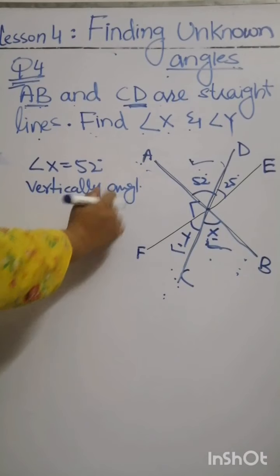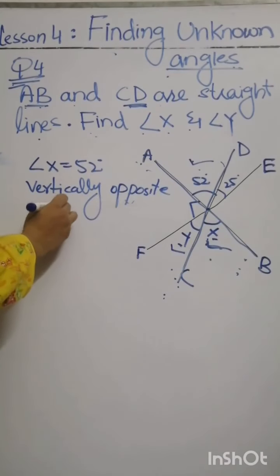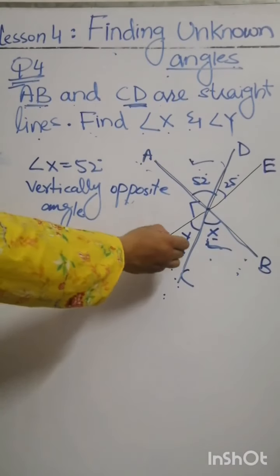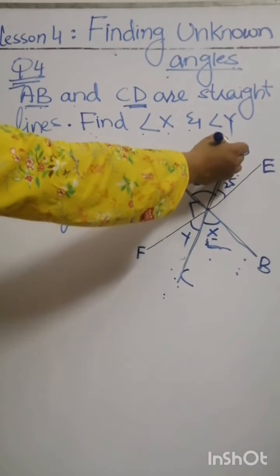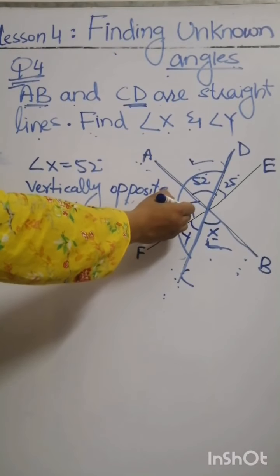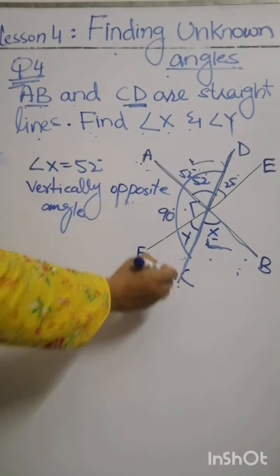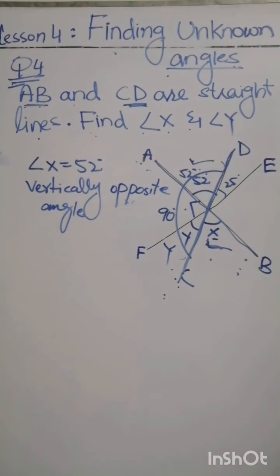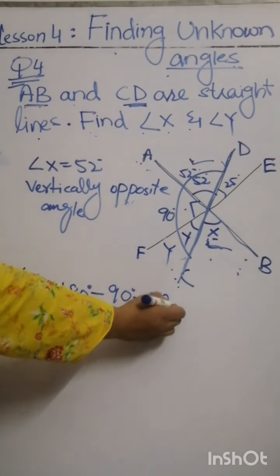Now for the other angle, angle y, we use angles on a straight line. We have CD as a straight line, with one angle being a right angle box — meaning 90 degrees — one angle of 52 degrees, and the third angle y. Angle y is equal to 180 minus 90 minus 52 degrees, because these three angles are angles on a straight line.